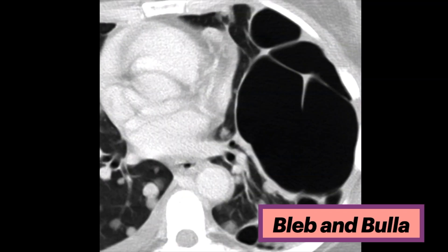This axial chest CT of a patient with benign metastasizing leiomyoma and left upper lobe giant bullous disease shows a large left apical air-filled space with internal septations. Holy moly!